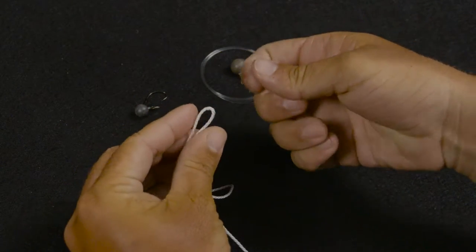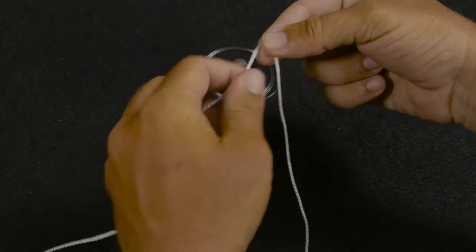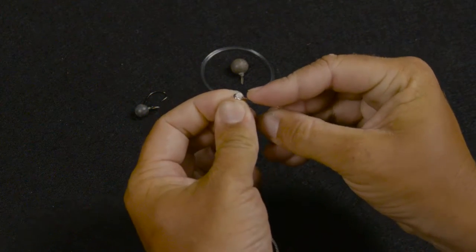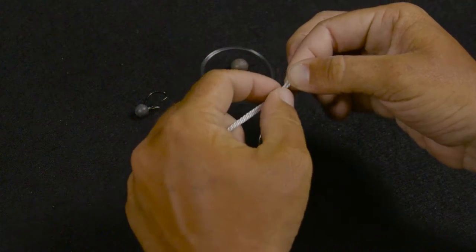To do a drop shot, first step is tying a Palomar knot. You double that line over, pass through the eye of the hook, tie an overhand knot.